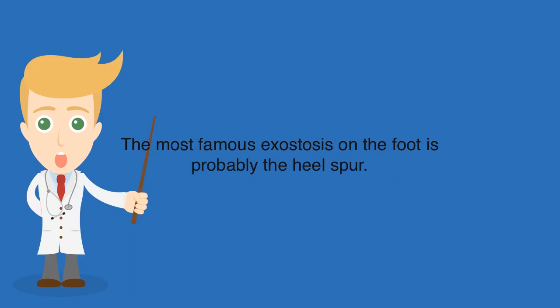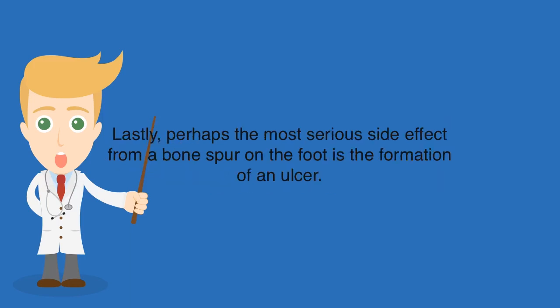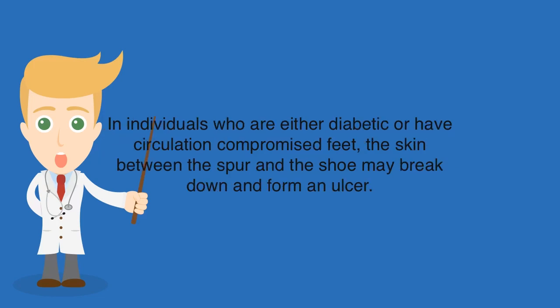The most famous exostosis on the foot is probably the heel spur. Heel spurs can occur both on the bottom of the heel and the back of the heel, although the classic heel spur is the one occurring on the bottom of the heel. Perhaps the most serious side effect from a bone spur on the foot is the formation of an ulcer. Since this condition is an overgrowth of bone, it can create friction or pressure points against the shoe. In individuals who are either diabetic or have circulation-compromised feet, the skin between the spur and the shoe may break down and form an ulcer.